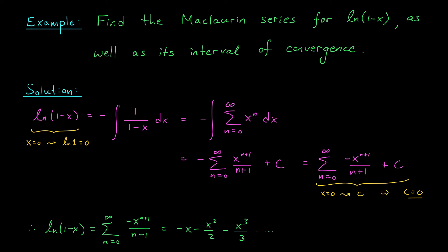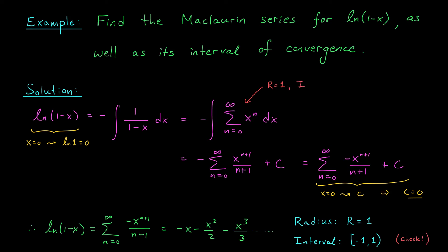What about the radius of convergence? To go from the Maclaurin series for 1 over 1 minus x — which had radius of convergence 1 — to the Maclaurin series for ln of 1 minus x, we integrated and multiplied by a non-zero constant. Those two operations do not affect the radius, so the radius remains 1. What about the interval of convergence? In this case, the interval does change. The interval is now the half-closed, half-open interval from minus 1 to 1. By integrating, we obtained a new point where the series converges, unlike the open interval we had before.